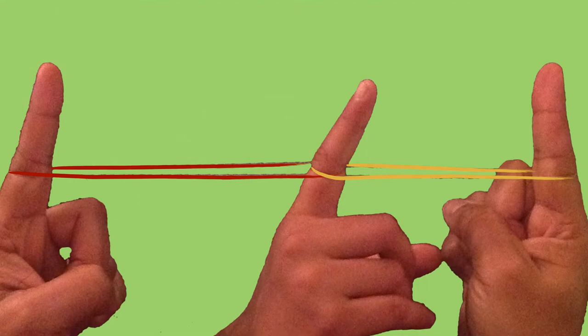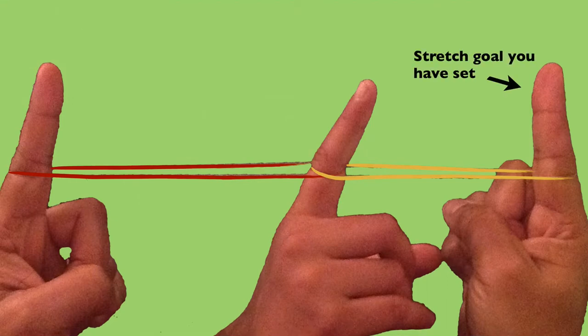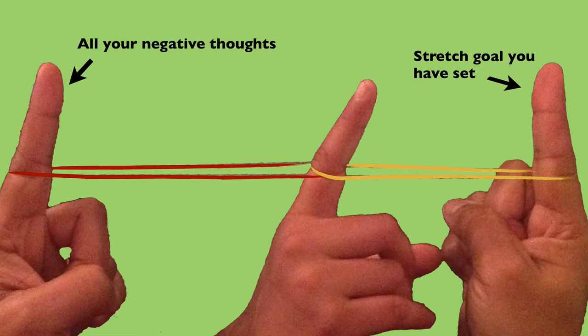Remember, the rubber band in front is the stretch goal you have set. The rubber band on the other side depicts all your negative thoughts, like you are incapable or unworthy of achieving the goal you have set.